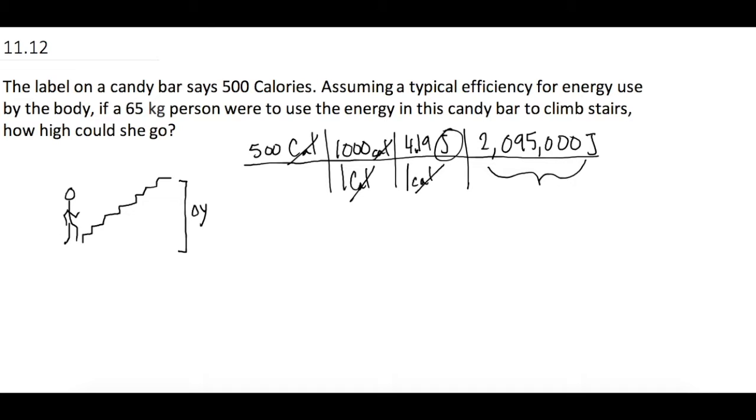But they tell us in the question that we have to assume a typical efficiency for energy used by the body. So what they're saying is, we know that we have 2,000,000 joules that that candy bar is giving us, but we can't use all of that. Our body is just not as efficient as we would like it to be. That would be awesome if we could, but we don't. And so in the book, they talk about how for an average human,